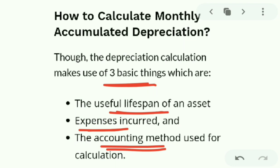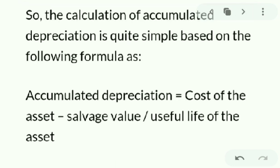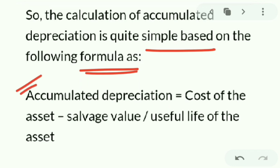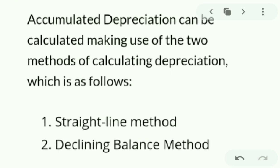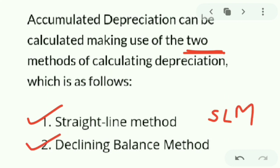The calculation of accumulated depreciation is based on the formula: Accumulated Depreciation = (Cost of the Asset − Salvage Value) ÷ Useful Life of the Asset. Accumulated depreciation can be calculated using two methods: the Straight Line Method (SLM) and the Declining or Diminishing Value Method (DMV).